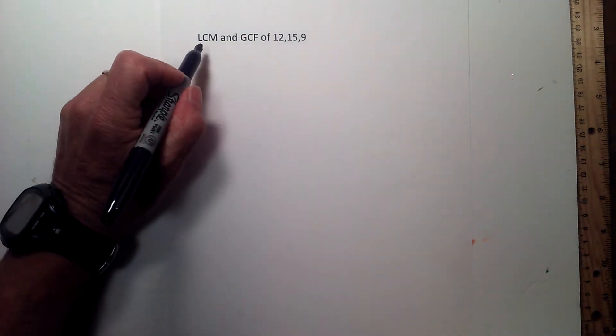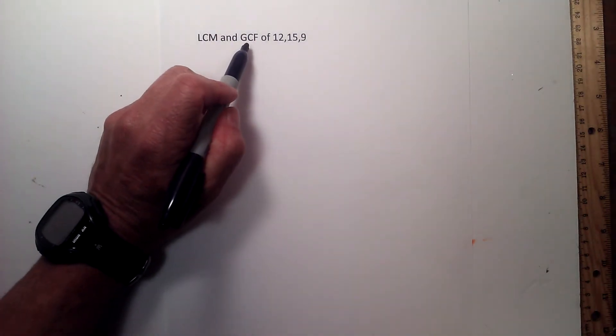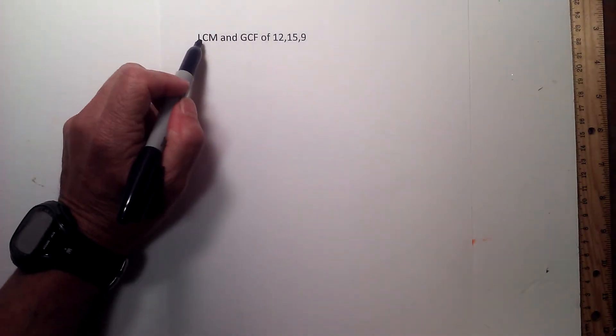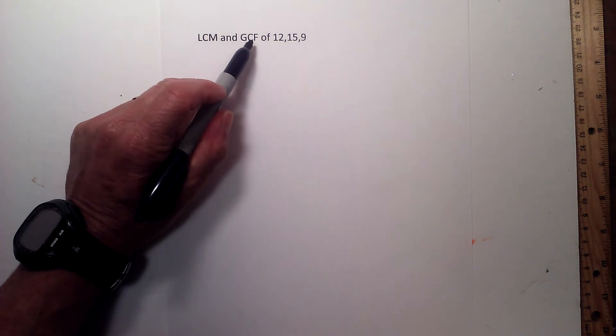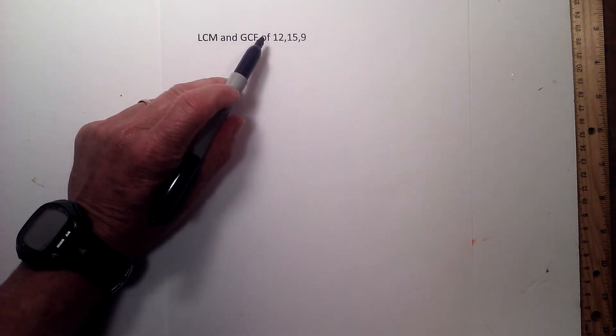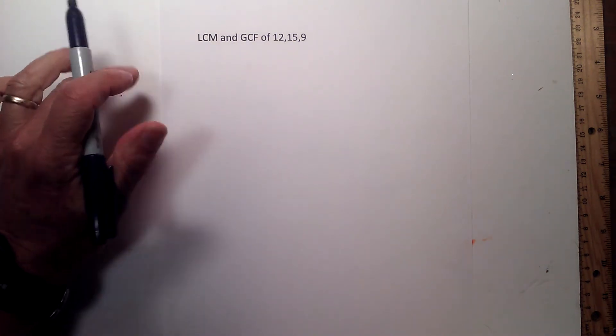In this video I will find the LCM and the GCF — lowest common multiple and greatest common factor — of 12, 15, and 9.